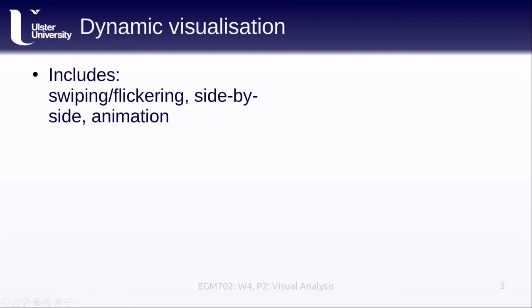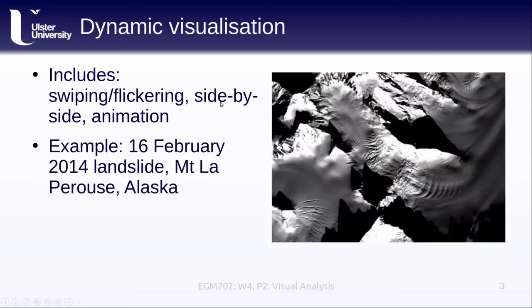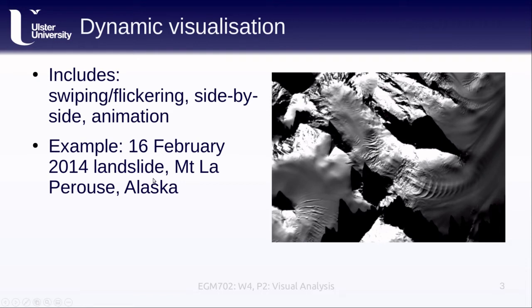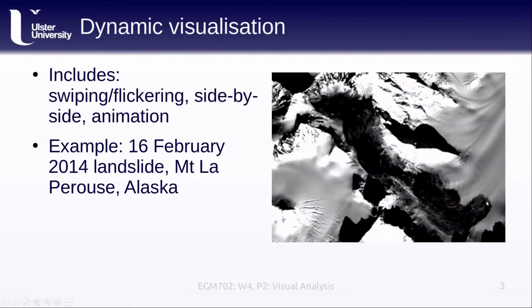So one technique of visual interpretation or visual analysis is something called dynamic visualization. This refers to somehow viewing the two images dynamically. This could be using the swiping or flickering options in our GIS software, or just looking at the two images side by side or using an animation like what you see here. This shows a landslide that happened on 16th of February 2014, which happened on Mount La Perouse in Alaska. You can see the before image where we have the glacier surface mostly free of debris, and the after image where we see a very large landslide that has come down off the mountain.